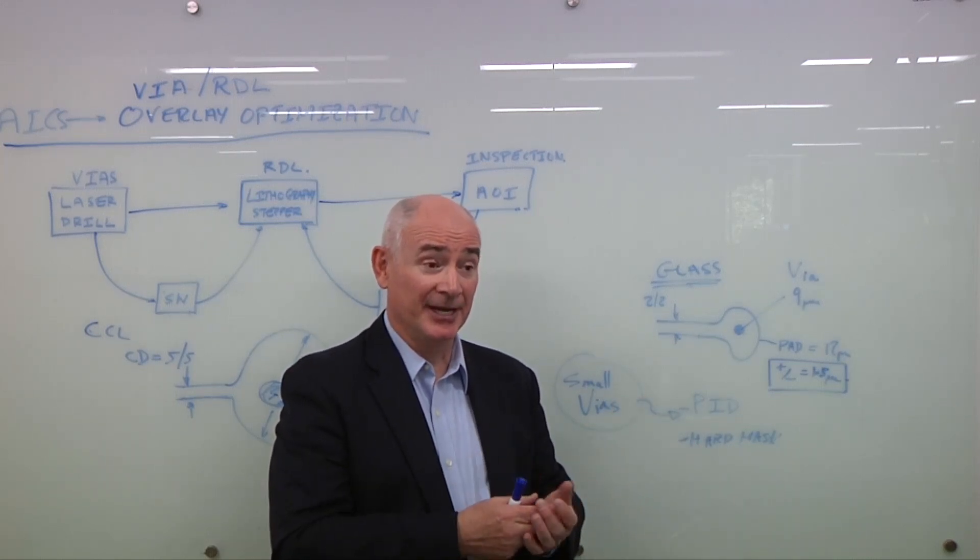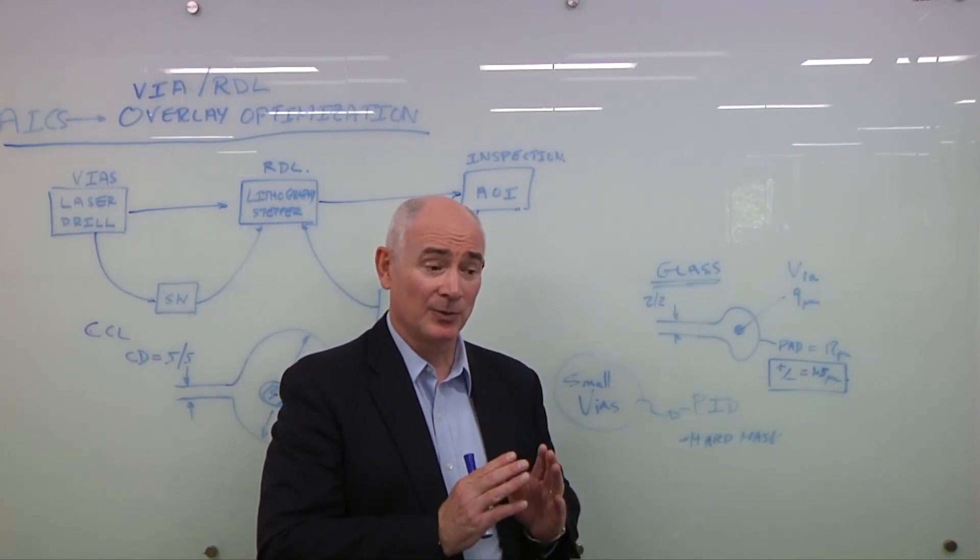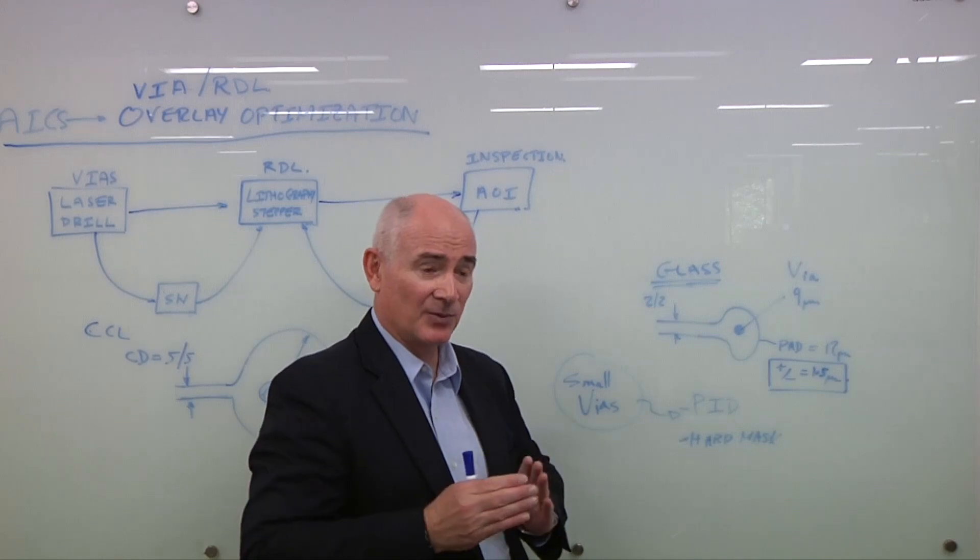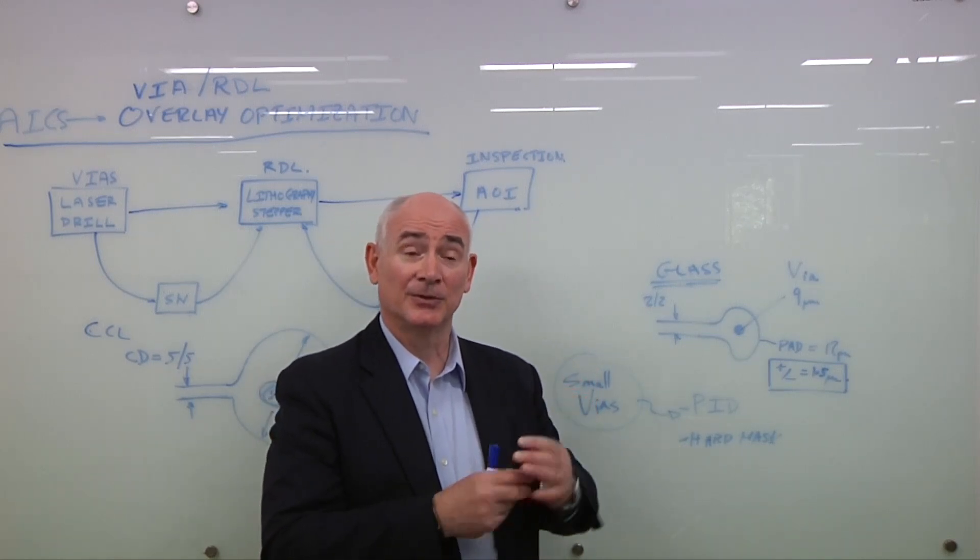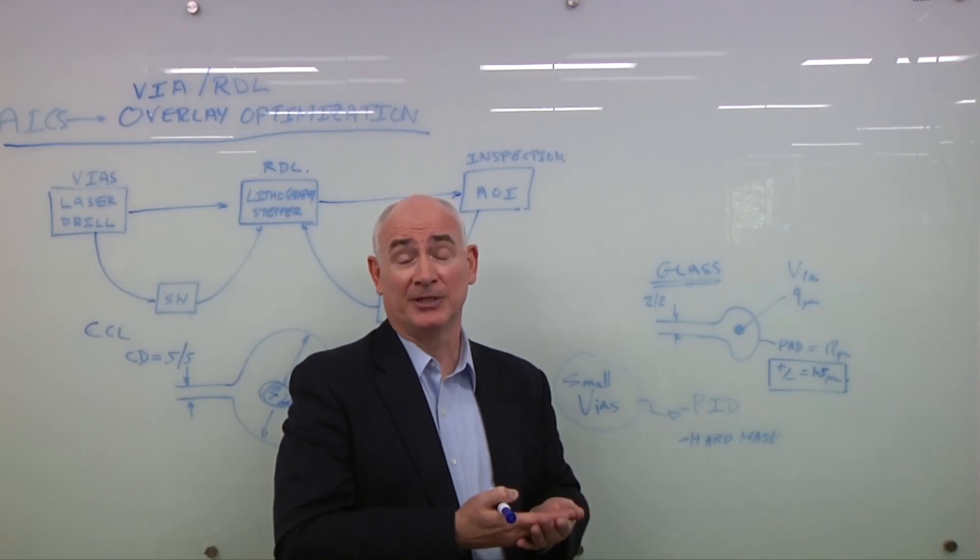And the reason for this is to get much smoother metal lines. So we have the glass, which is your stability. But the actual signal integrity is dependent on the actual roughness of the metal line. Now, not just in the XY dimension, but also in the Z dimension. The top and the bottom of the line also needs to be smooth.